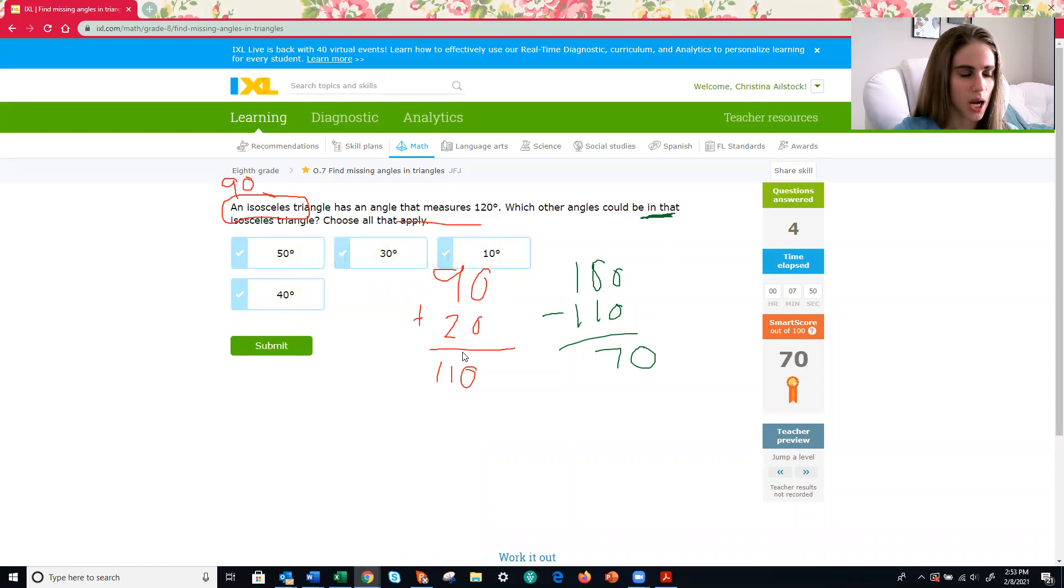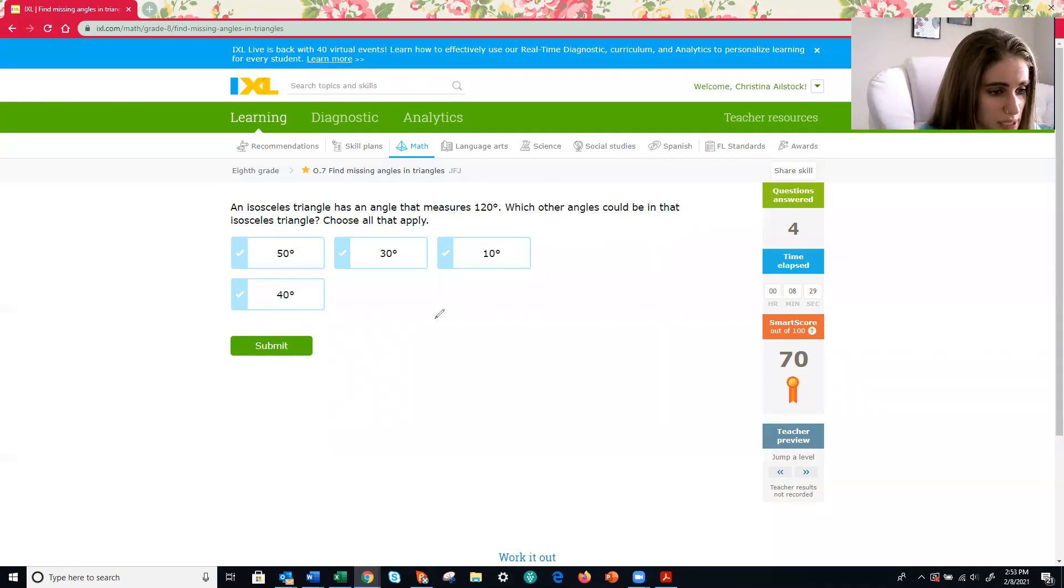All right. Bravo. Ooh, this will be our last one. This looks kind of fun. An isosceles triangle has an angle that measures 120 degrees. Which other angles could be in that isosceles triangle? All right. Let's think back to our lesson earlier this week. What does it mean for something to be an isosceles triangle? Two sides are equal. And if two sides are equal, that also means two angles are equal. So if we draw this out, we have an isosceles triangle. Two sides are equal. So that's what we're trying, which means those two angles would also be equal. And I know one of the angles is 120 degrees.